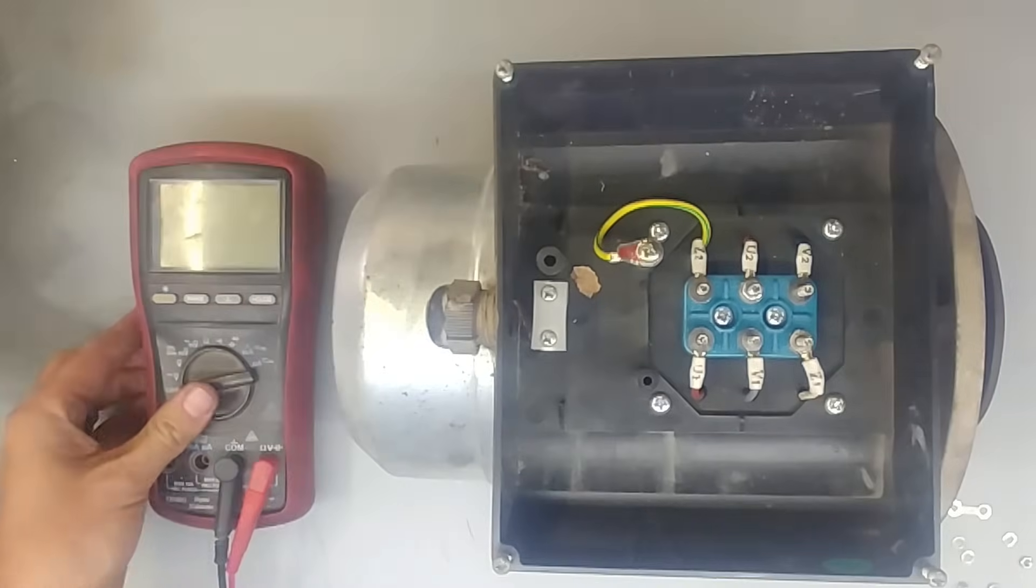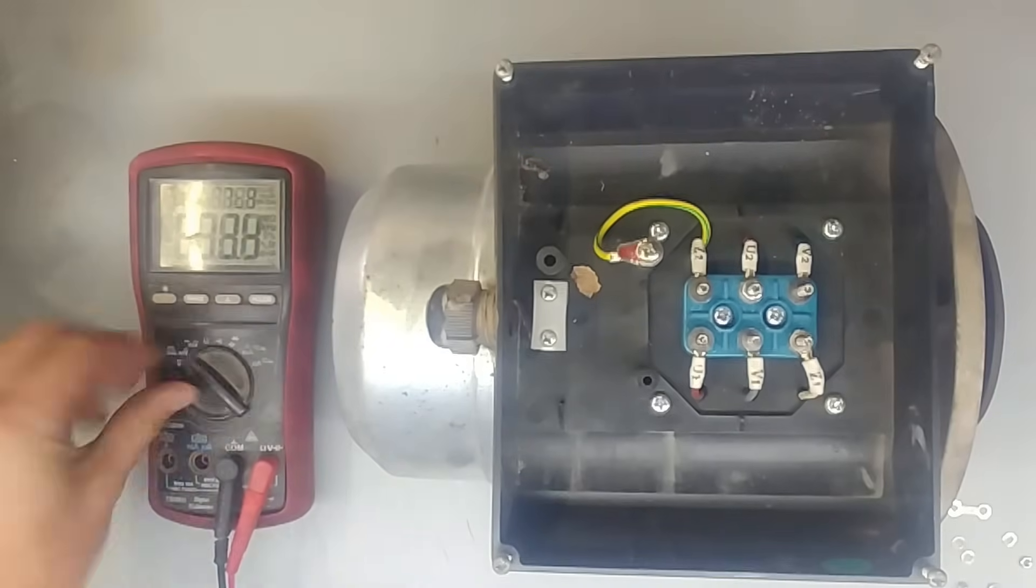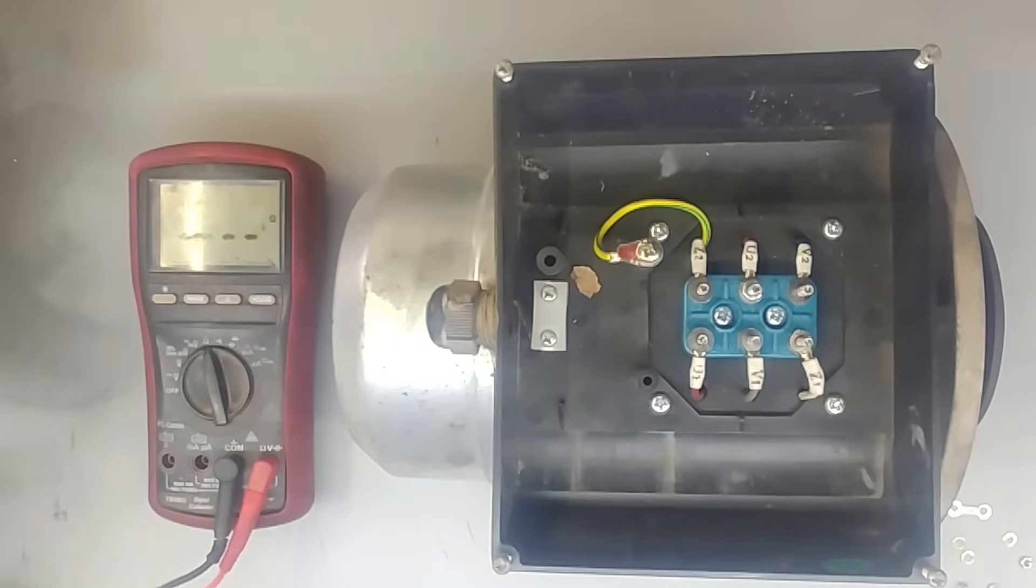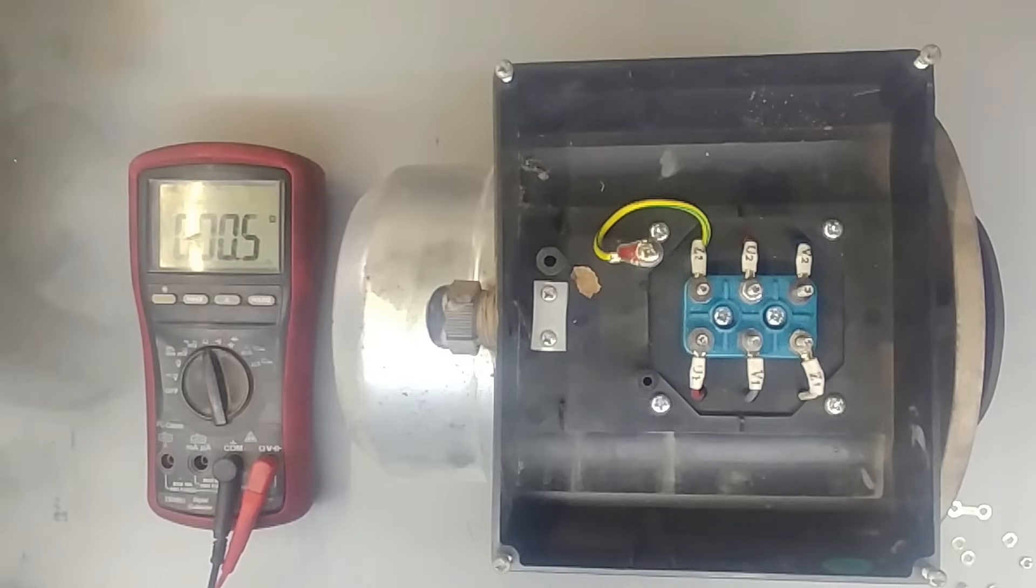So you'll need a multimeter that can test ohms. This one is an auto range multimeter. If you have one just put it on around about 20 ohms, that should be fine. You can test it by pressing the two points together. It should be zero or close to zero.